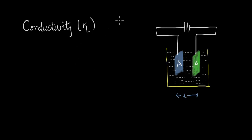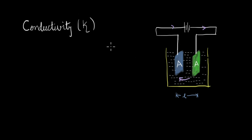In an earlier video, we looked at conductivity to help us understand how the flow of electrons takes place in the solution of an electrolytic cell. Now because the actual charge transfer happens via ions, the number of ions in the solution — or the concentration of ions — is an important factor that will affect the conductivity. So we want to know how conductivity changes when we change the concentration of the solution.